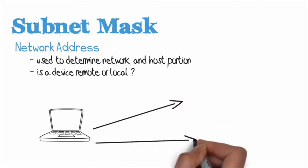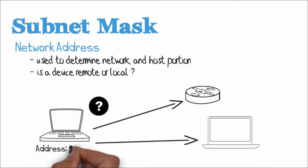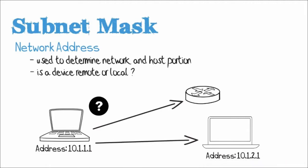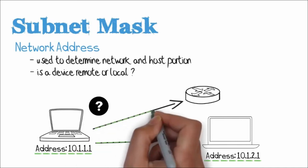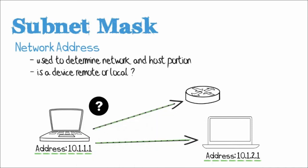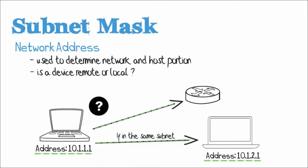Here's an example. We have a PC with IP address 10.1.1.1 and another PC with an IP address of 10.1.2.1. When the PC on the left wants to forward traffic to the PC on the right with IP address 10.1.2.1, does the PC forward the traffic onto the local segment or does it forward it to its default gateway? If these two devices are in the same subnet, they can communicate directly without the use of a default gateway.